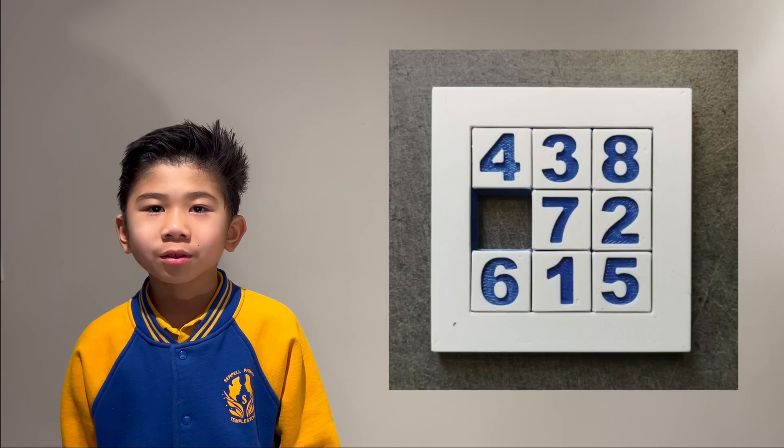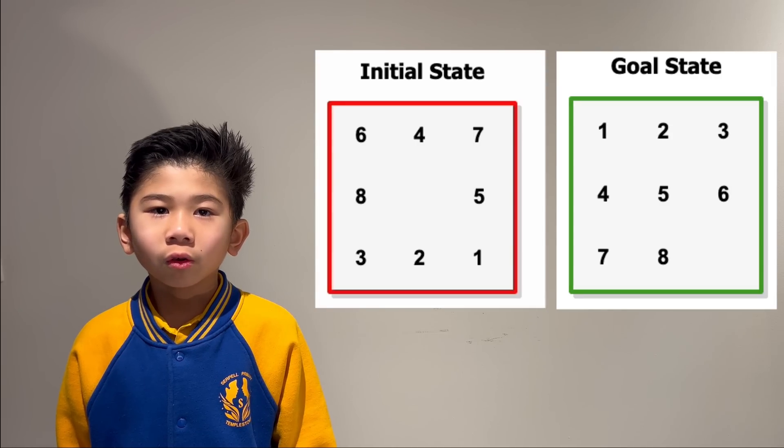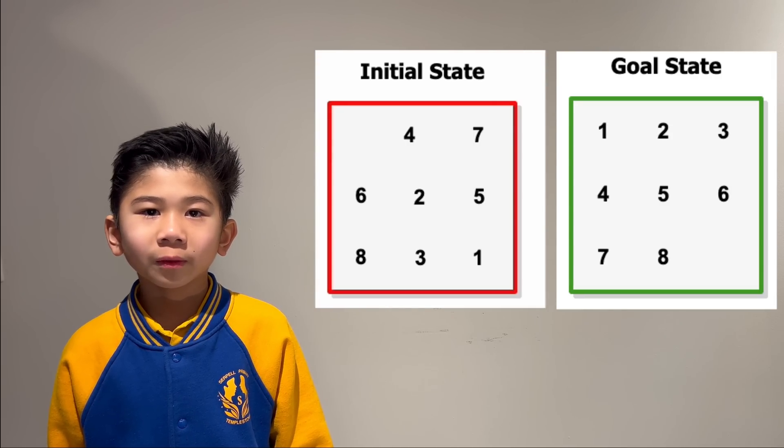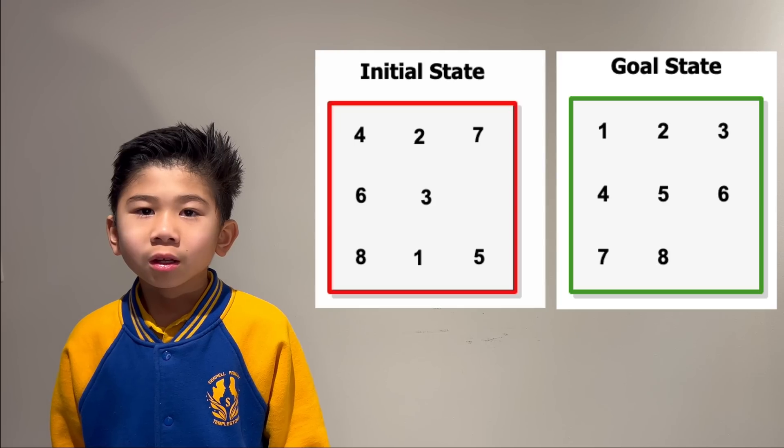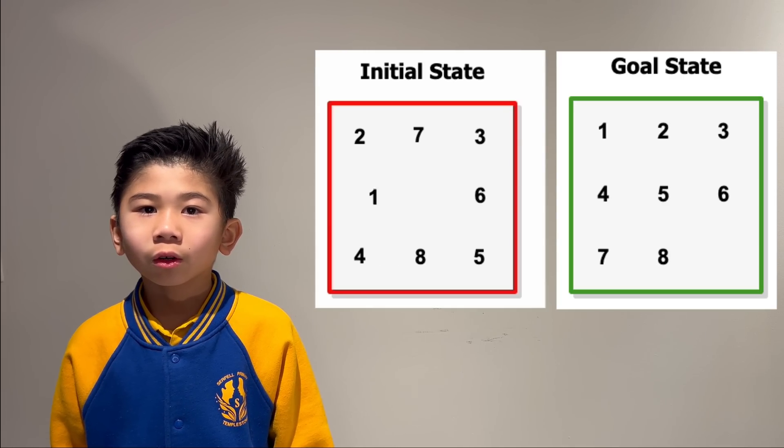Sam Lloyd, an American chess player and puzzle maker, invented the sliding tiles puzzle in the 1870s. The goal is to slide the tiles from the scrambled state, called initial state, to an ordered state, called the goal state, with the least number of moves.